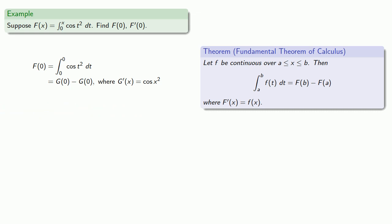So let's see, we need to find some function whose derivative is cosine x squared. Actually, we don't. This is g of 0 minus itself, which is guaranteed to be 0.